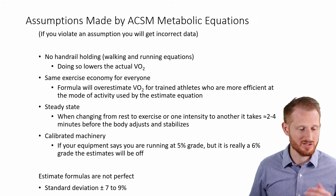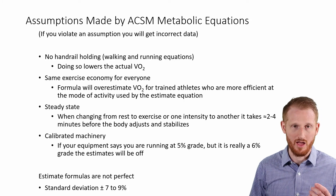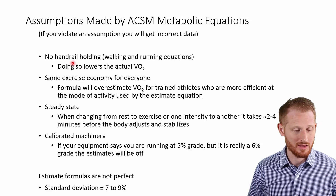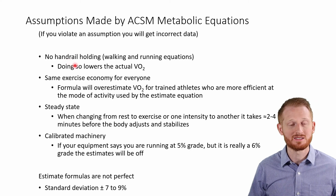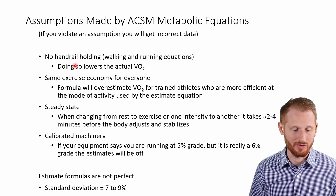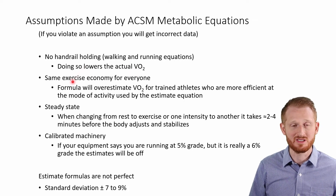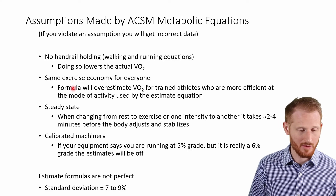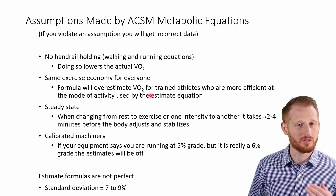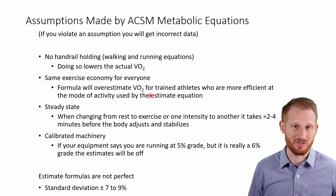If you're going to use any of these equations, you need to be aware of some additional assumptions. For treadmill-based equations (walking or running), the person should not be holding the handrails, because doing so reduces the actual oxygen consumption — the handrails take over some of the effort needed to keep the body upright and move forward. These equations also assume everyone has the same exercise economy, so for a trained runner or athlete who is more efficient, the equations may overestimate their oxygen consumption.